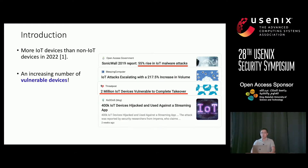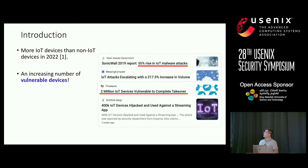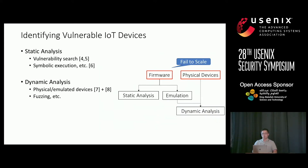Data from IoT analytics shows that there will be more IoT devices than non-IoT devices in the near future. With the explosion of the IoT market, there is also an increasing number of vulnerable IoT devices. There are security incidents every day — a 55% rise in IoT malware attacks, and 2 million IoT devices are vulnerable to complete takeover. The question is: how could we identify that?